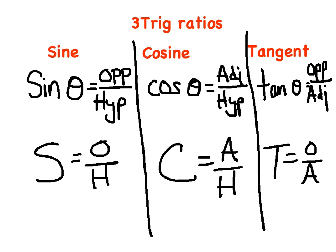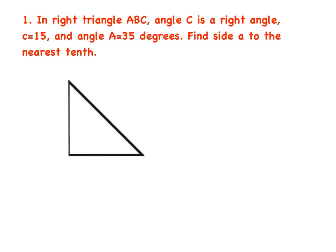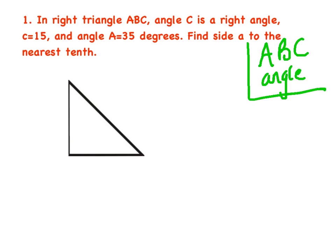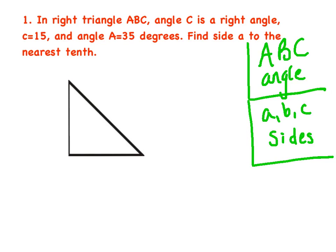With that in mind, we can easily answer any trig question. Let's move on to our first example. In right triangle ABC, angle C is the right angle, c equals 15, and angle A equals 35 degrees. Find side a to the nearest tenth. Capital letters A, B, C refer to angles, while lowercase letters a, b, c refer to sides. We always want to slow down, read the question, and label our picture carefully.